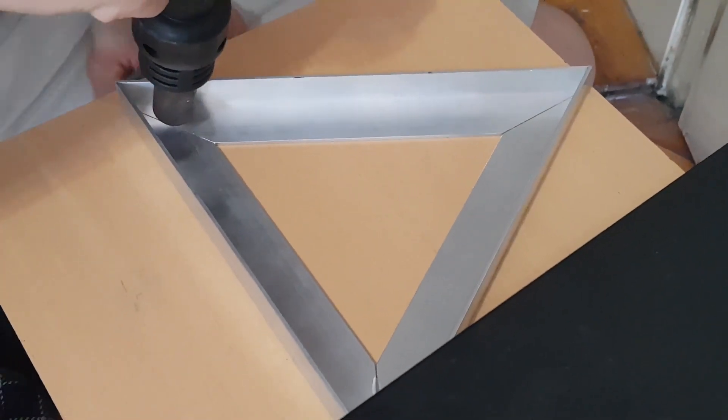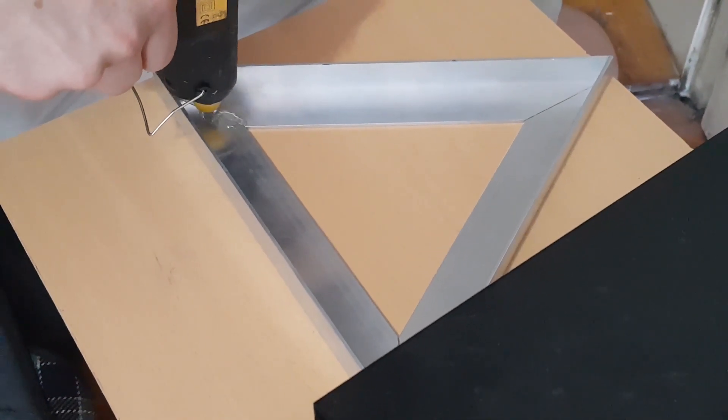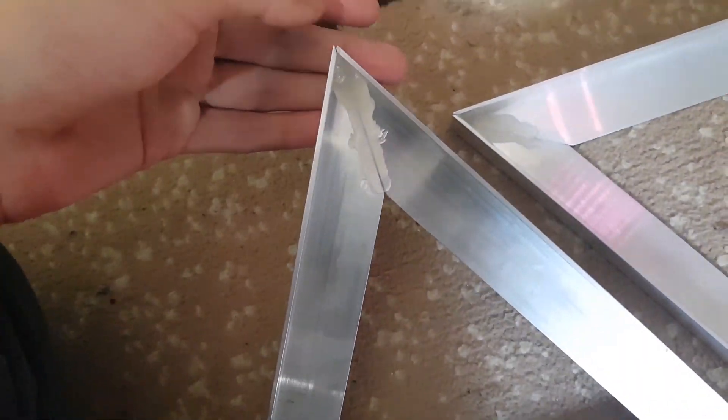So the gluing process was really simple. First of all we heated up the aluminum to give the hot glue more time to cure and then we just added glue and that's it.